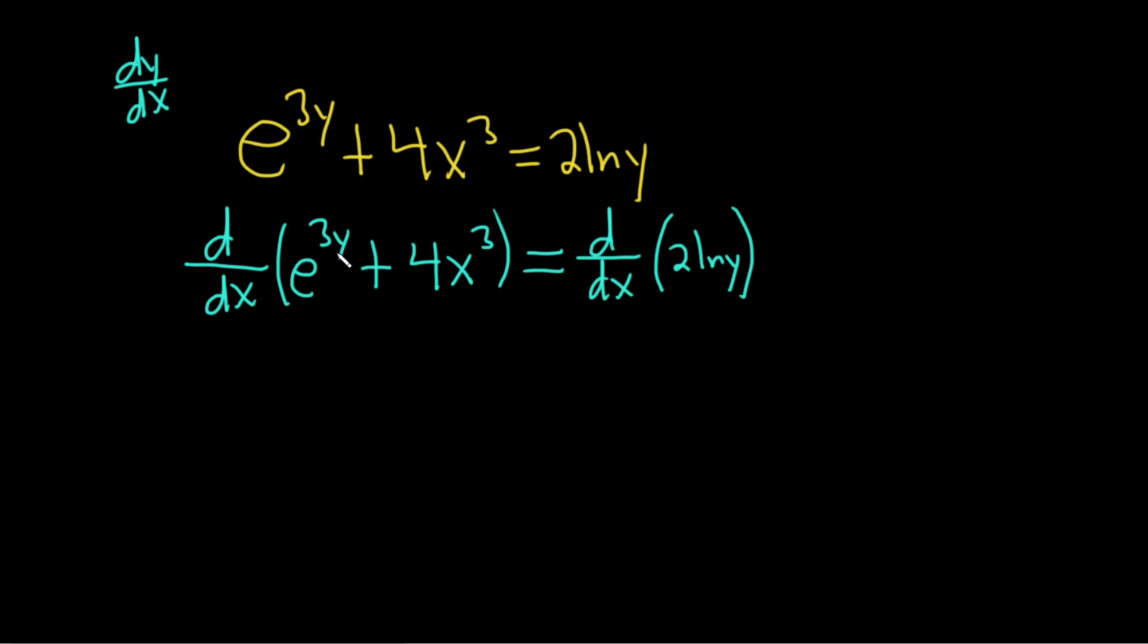So first let's focus on e to the 3y. Recall that the derivative of e to the x is simply e to the x. Here it's e to the 3y, so we use the chain rule: it's the derivative of the outside, e to the 3y, leave the inside piece untouched, and then times the derivative of the inside piece. The derivative of y is just dy/dx. The 3 is a constant, so we have 3 dy/dx.